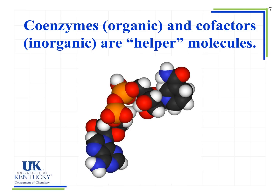Organic molecules are primarily carbon and hydrogen, possibly with other non-metals. Inorganic cofactors don't primarily contain carbon and hydrogen — typically when looking at cofactors they often include a metal such as zinc or iron. Many metals found in our body are used as cofactors because they serve as helper molecules for enzyme reactions.